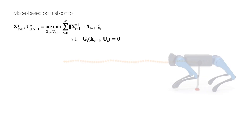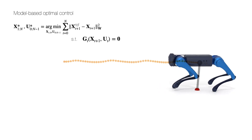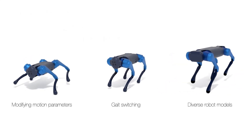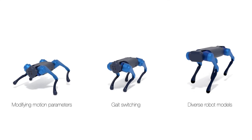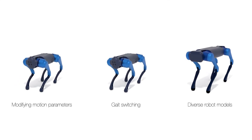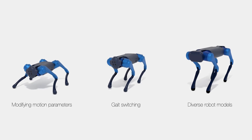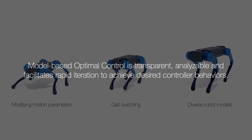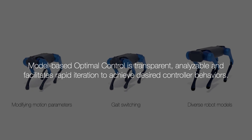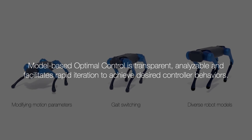Model-based optimal control is a powerful tool widely used in legged locomotion research. It allows control engineers to make various design choices regarding motion primitives, system dynamics, and control parameters based on simplifying assumptions. This approach offers the advantage of transparency and analyzability and facilitates rapid iteration to achieve desired controller behaviors.